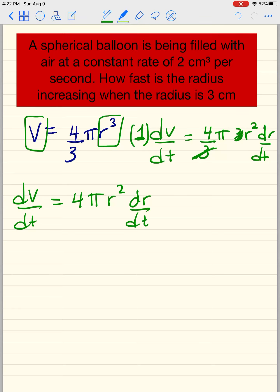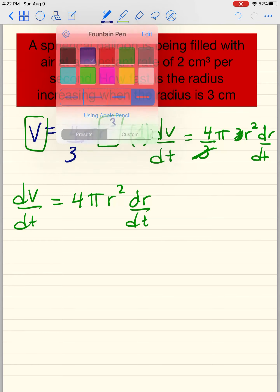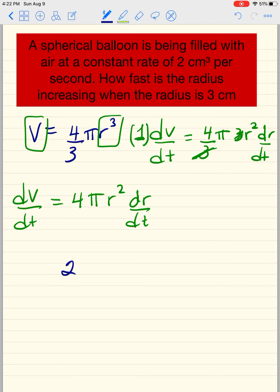Now, if you take a look at what we have here, it says the balloon is being filled with air at a constant rate of 2 cubic centimeters per second. I discussed the importance of per. So 2 cubic centimeters per second. So this value here has to go with something that has a line.